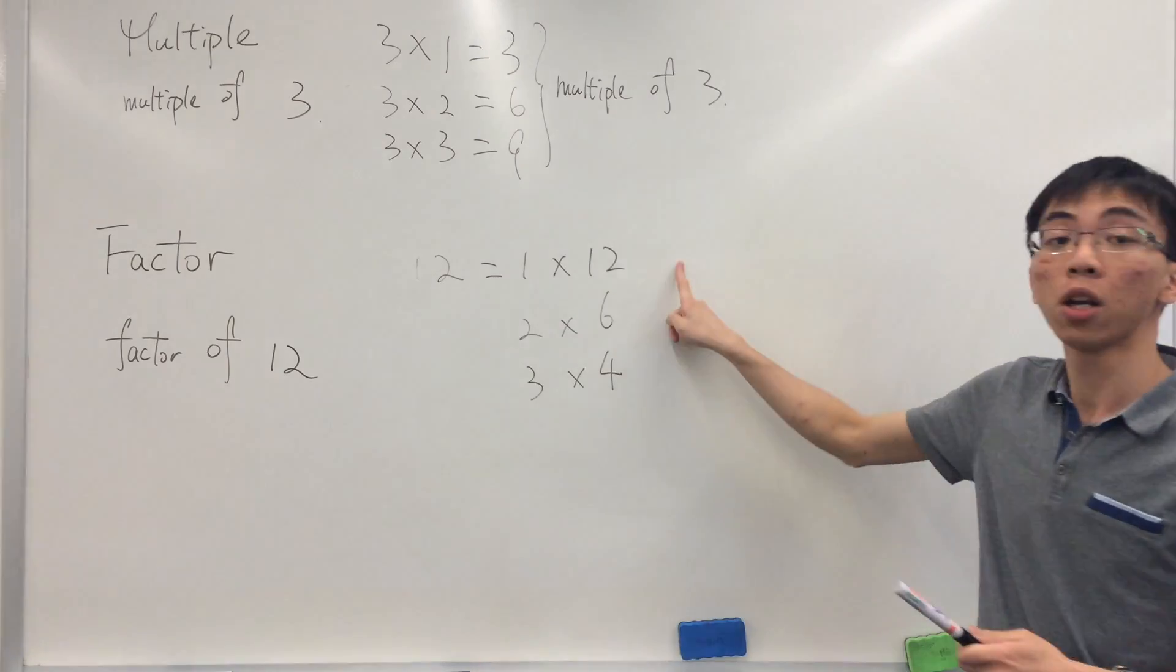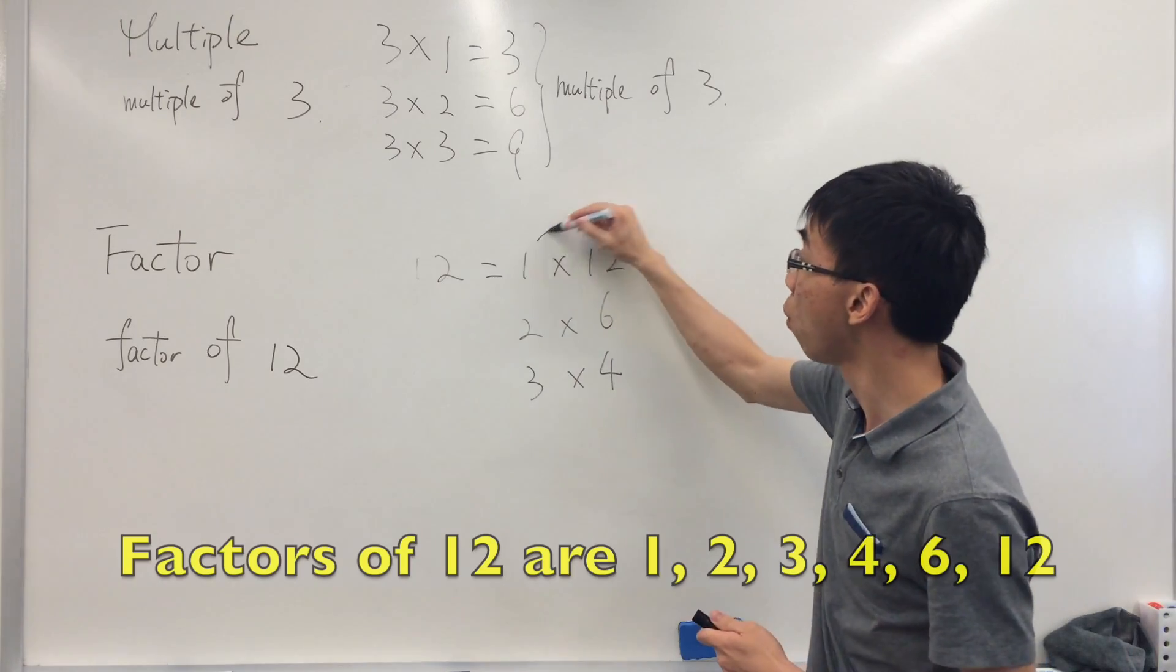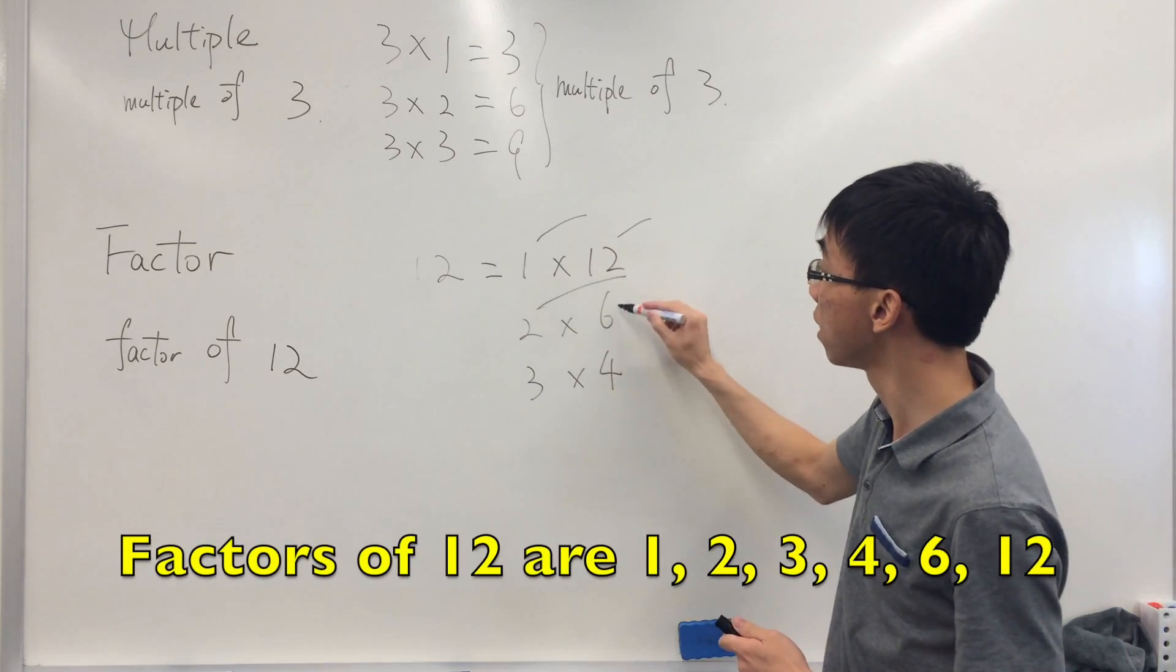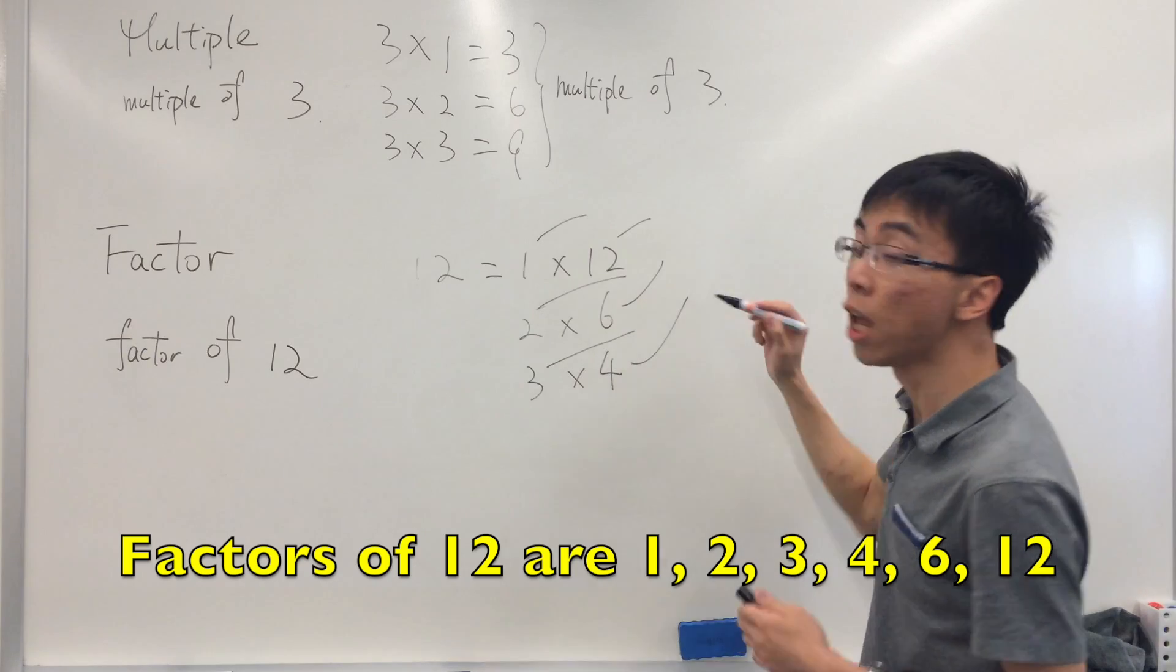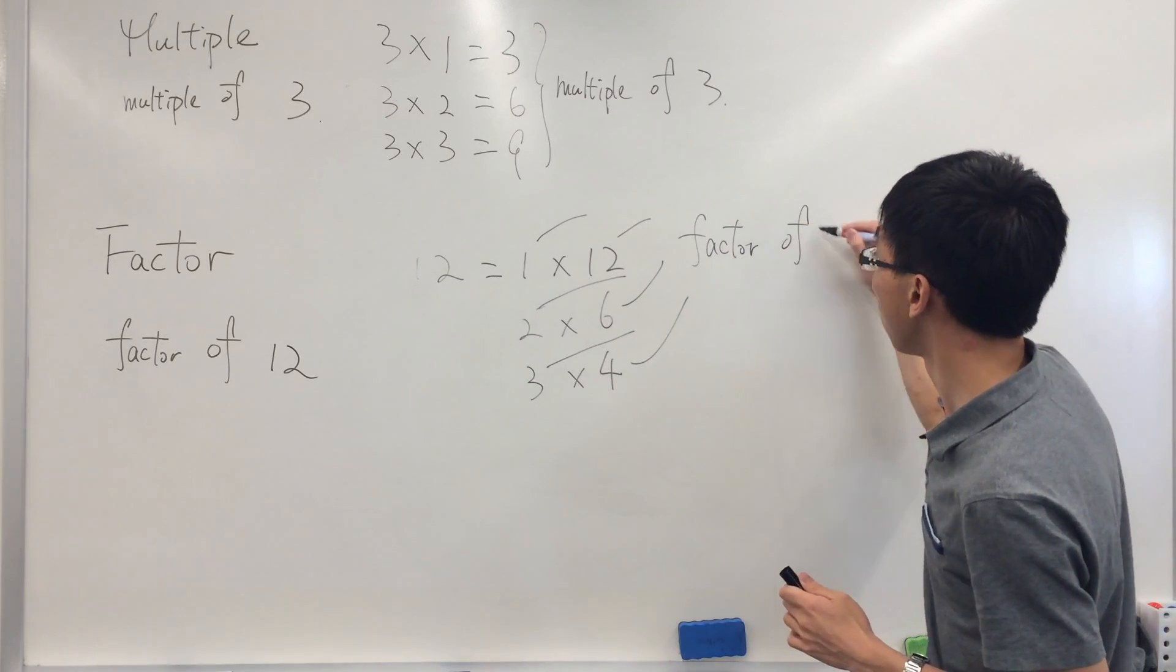And here, if we express twelve as a number times another number, then those numbers here, one, twelve, two, six, three, and four, they are all called a factor of twelve.